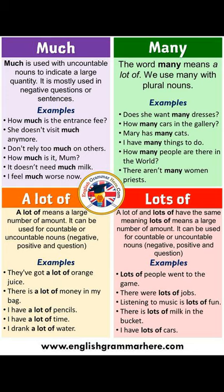How to use 'a lot of' in English. 'A lot of' means a large number or amount. It can be used for countable or uncountable nouns in negative, positive, and question sentences. Example sentences: They've got a lot of orange juice. There is a lot of money in his wallet. I have a lot of cats.